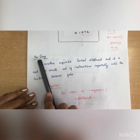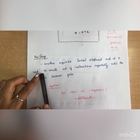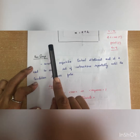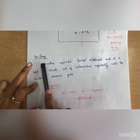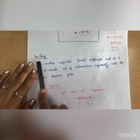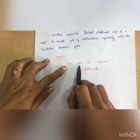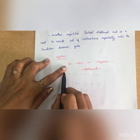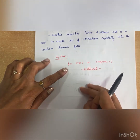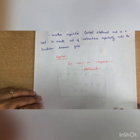Next comes the for loop. For loop is also a repetitive control structure used to execute a set of instructions repeatedly until the condition becomes false. The syntax is: for variable in sequence colon, then with one indentation you write all the statements. All indented statements belong to the for loop.